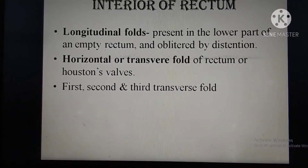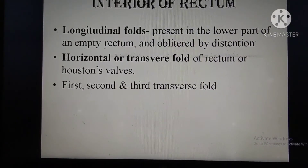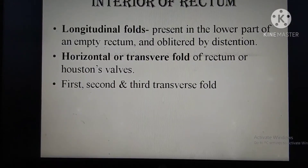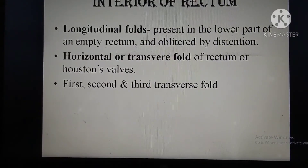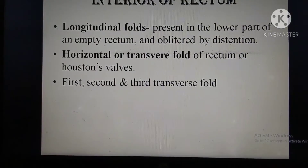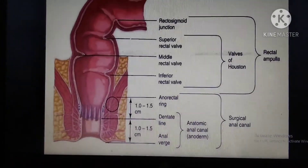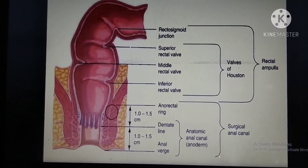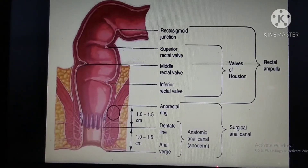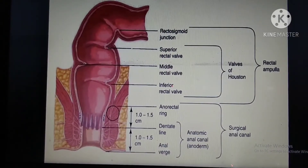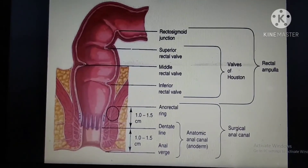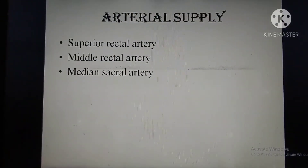The interior of the rectum shows two types of folds: longitudinal folds and horizontal or transverse folds. Longitudinal folds are present in the lower part of an empty rectum and are obliterated by distension. The transverse folds, also called Houston's valves or Austin's valves, are the superior, middle, and inferior rectal folds — first, second, and third transverse folds.